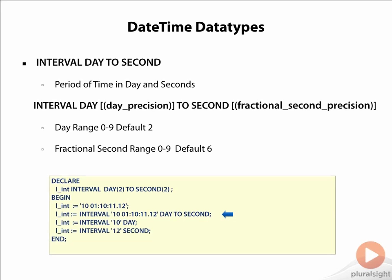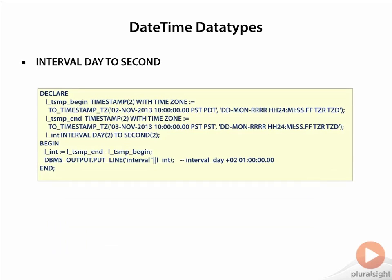Note that in PL/SQL you cannot specify day or second precision in a date literal when assigning it to a DAY TO SECOND variable. You can assign just an interval of 10 days or 12 seconds to the variable. INTERVAL DAY TO SECOND is also extremely useful in finding time differences between timestamps down to fractional seconds.